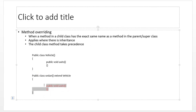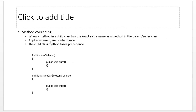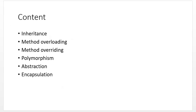Whenever you override a variable or method in the child class, the child class implementation always takes precedence. To summarize: method overloading is two or more methods of the same name but different arguments in one class; method overriding is two or more methods of the same name in different classes where one is a parent and one is a child.